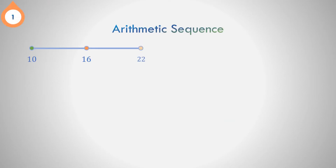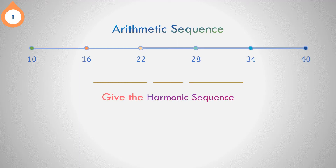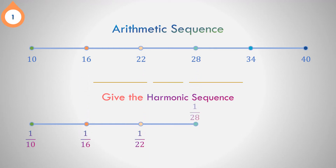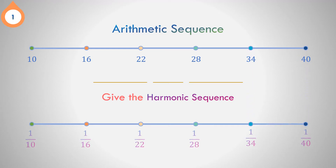Can you give the harmonic sequence of this arithmetic sequence: 10, 16, 22, 28, 34, 40? What is the harmonic sequence? Correct. The harmonic sequence is 1/10, 1/16, 1/22, 1/28, 1/34, and 1/40.